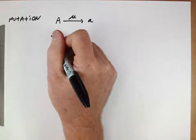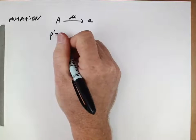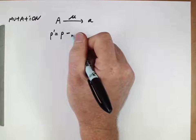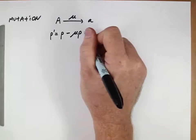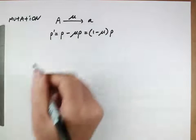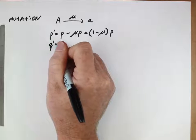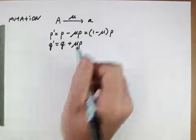And so now if we think about what's the new frequency of p, it's the old frequency of p minus the proportion of those alleles that mutated. So we can also represent it this way. What's the new value of q? What's the old value of q plus the ones that mutated to it?